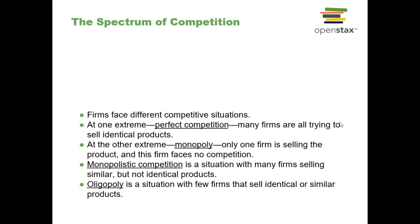I'm also going to quickly introduce the idea of competition. Next week we're going to talk about different models. In the extreme case, we have perfect competition, where there are so many firms that no one can affect the price and everybody sells identical goods. The other extreme is monopoly — one firm, one product, no competition. Then there's a spectrum called monopolistic competition. We're going to focus primarily on perfect competition and monopoly, since neither exists in a pure form in the real world, but they're very good at helping us understand it.